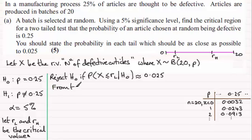since the probability of X being less than or equal to 1, given the null hypothesis is true, in other words, that P equals 0.025, that equals 0.0243. And so the lower critical value RL must be equal to 1. And as for that probability, which we're asked to state, it would be 0.0243.